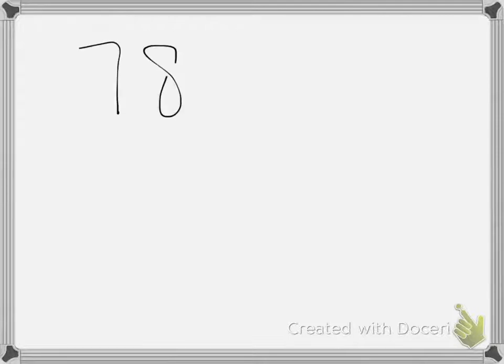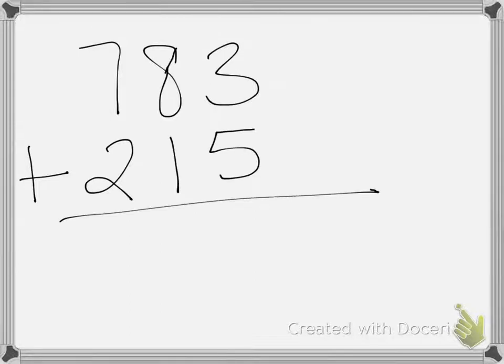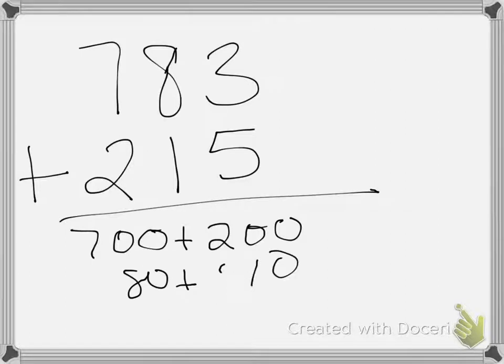So if we have 783 plus 215, I can do 700 plus 200, 80 plus 10, and 3 plus 5, and then add them all together. How that would look for a decimal is making sure we line it up.